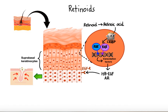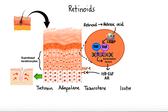The examples of topical retinoids are tretinoin, adapalene, and tazarotene. In general, all retinoids share the same mechanism of action. However, unlike the topical agents, the oral retinoid called isotretinoin has additional unique inhibitory activity on the sebaceous glands.